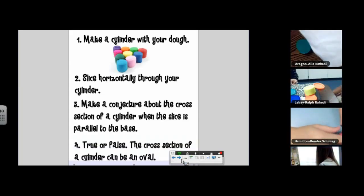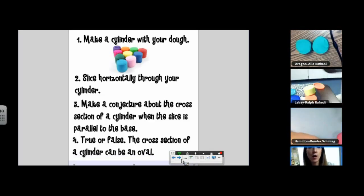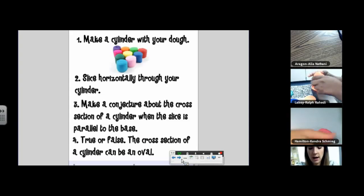Now, really important, same question as a sphere. The cross-section of a cylinder can be an oval, true or false. So what are you getting when you are slicing kind of diagonally through that cylinder? What are you finding? It's kind of hard to do. What kind of shapes are resulting? Did anyone get an oval?